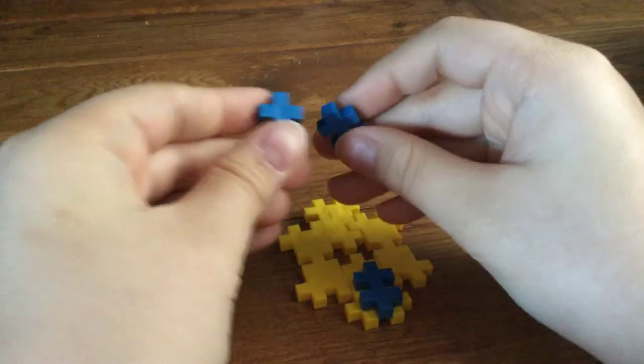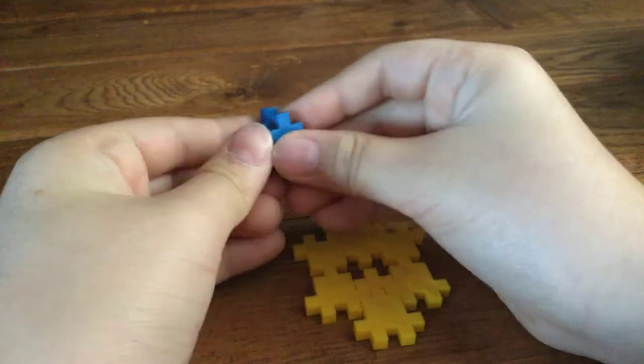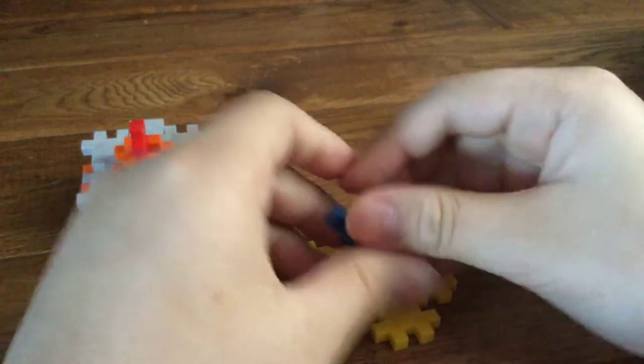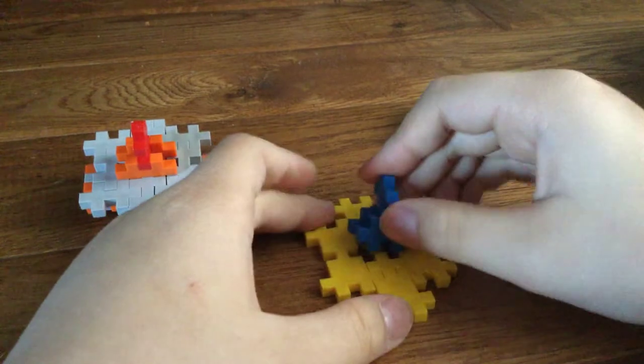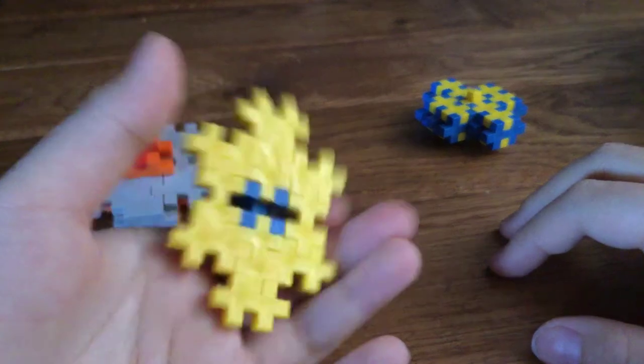So you take this, attach it together, the other one, then bam. Then use the disc, put it like this. Easy, easy, easy, right?